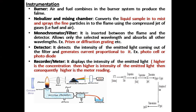The monochromator cuts off radiation from all other elements and allows only the wavelength of the element being analyzed. For potassium, the filter is set at 766 nm; for lithium, 670 nm; for calcium, 622 nm; and for sodium, 589 nm. One filter specific to each element is used, and all other radiations are cut off while the selected wavelength passes through.